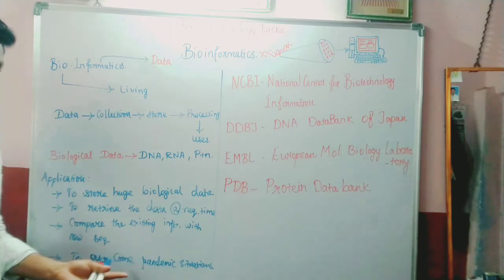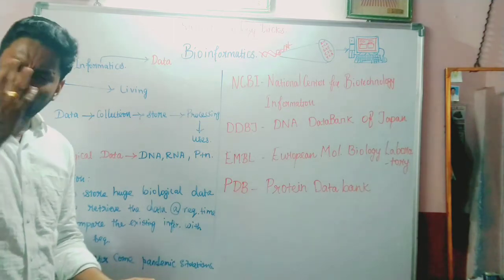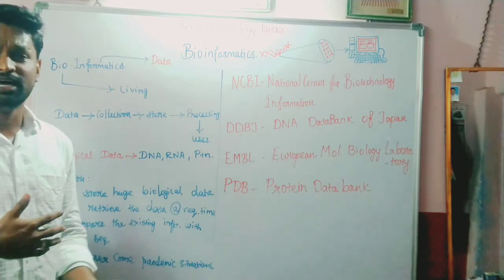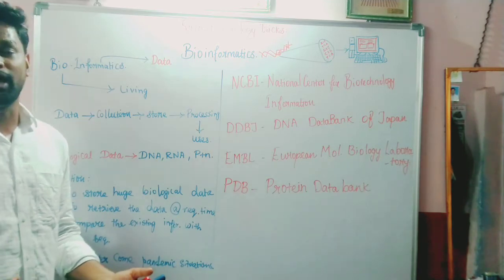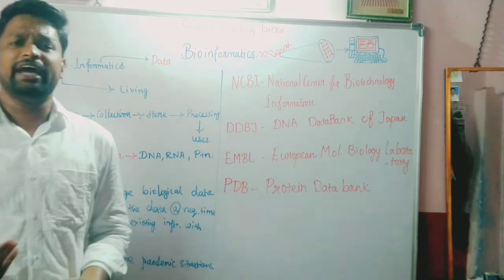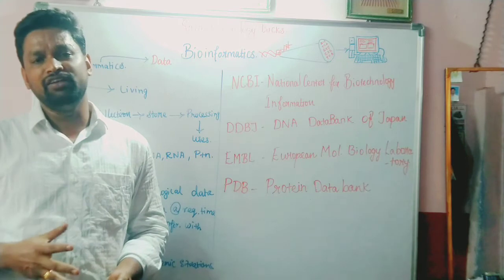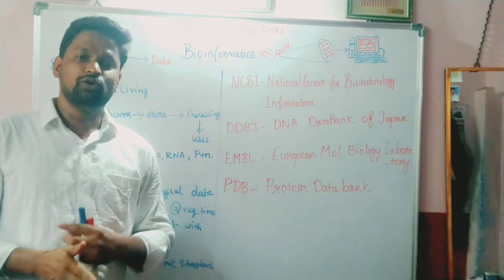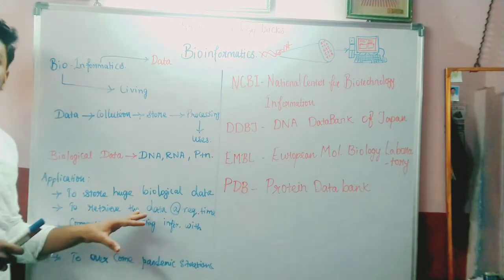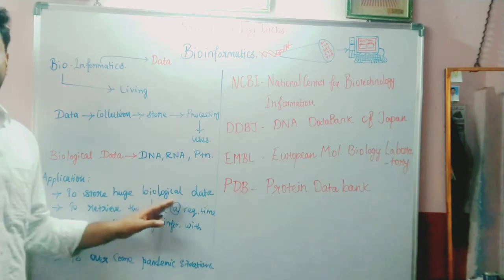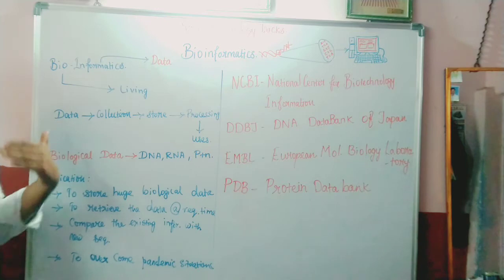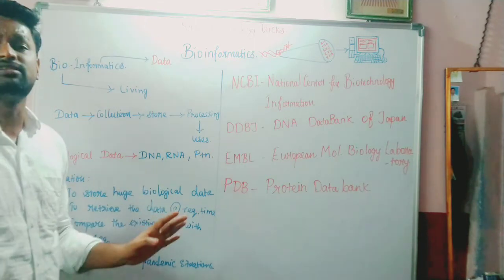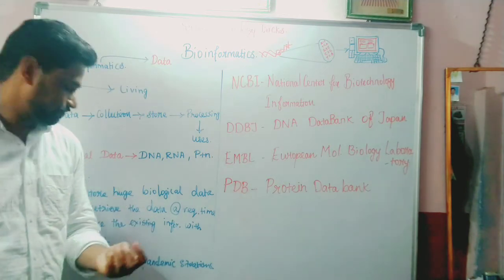Biological data is very huge. For example, in our human body there are a lot of cells — brain cells, heart tissue cells, soft cells in hot tissues, lung cells, adipose tissues, epithelial cells, and many more kinds of cells. All kinds of cells have nucleic acids, and all nucleic acids are not completely the same — some variations will be there. To sequence all genetic material and store all genetic information is a tough job. The huge amount of biological data can be processed, stored, and retrieved accurately when needed.